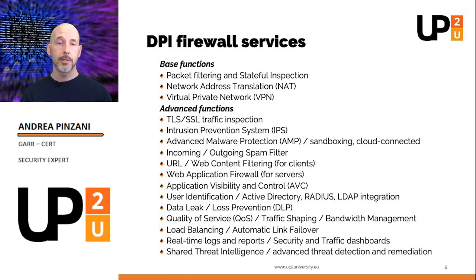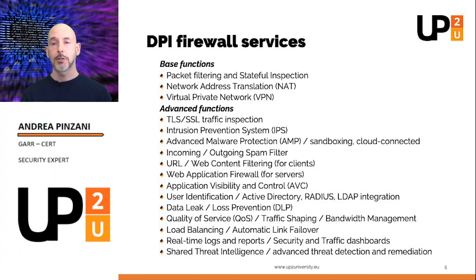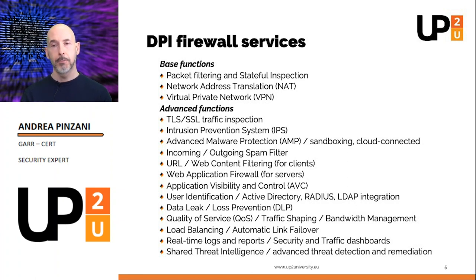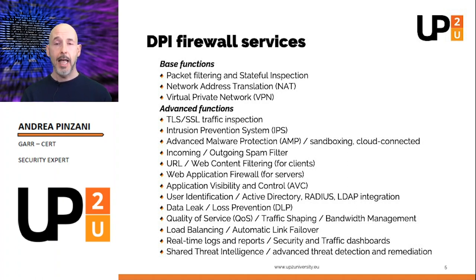DPI firewalls offer many features. I would like to draw your attention to three main functions. Many applications such as peer-to-peer file sharing and social networking evade security mechanisms by changing communications ports and protocols. Application visibility and control can identify applications and filter traffic based upon specific policies. A next-gen firewall can work with user authentication services, so the network manager can track and control access to services by users, regardless of the device used.